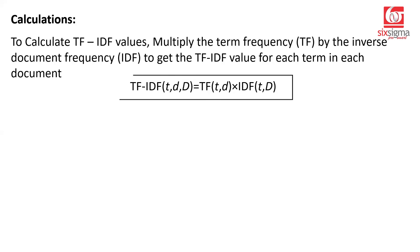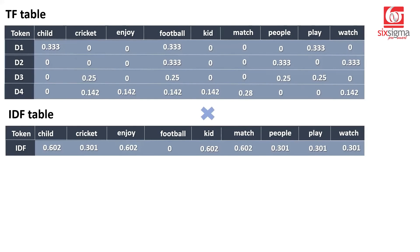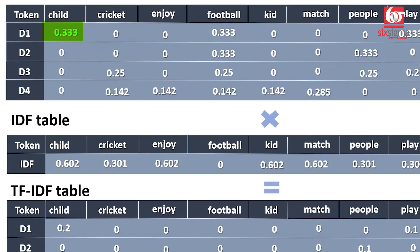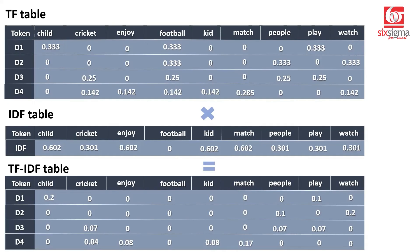Now we multiply TF by IDF to get the TF-IDF score. For 'child' in D1, TF = 0.33 and IDF = 0.602, giving TF-IDF = 0.2. For documents where child doesn't appear, TF-IDF is zero because TF is zero. For 'match' in D4, TF = 0.285 and IDF = 0.602, giving approximately 0.17. If either TF or IDF is zero, the product is zero.